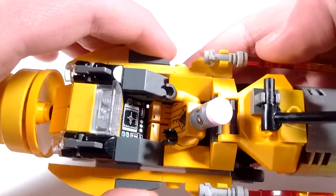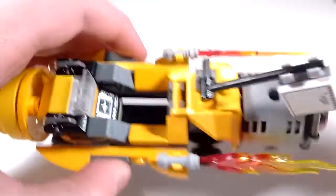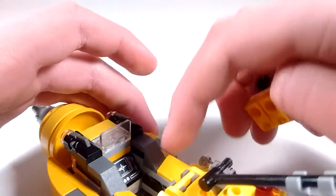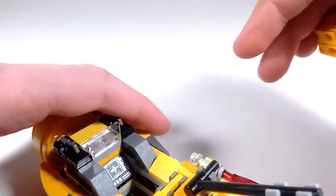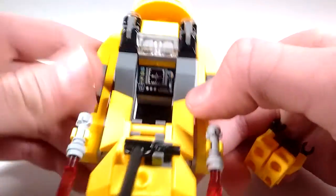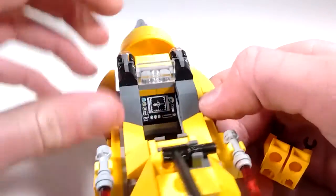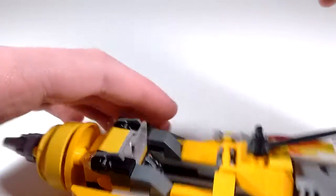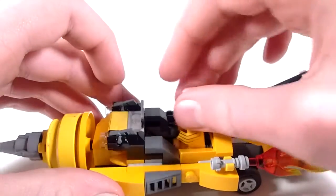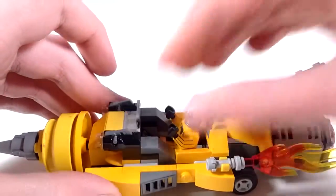Right here is the cockpit for the Eraser, and he just sits in there very nicely. And on either side, there's a couple of these new pieces for 2017. I think those look really cool. Right there, you can see a control panel, and I think that worked out pretty well. And then right there is a windscreen for him. So he just sits right there, and that looks awesome.